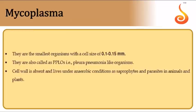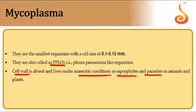Mycoplasmas are wall-less bacteria — they do not have a cell wall but have sterols (cholesterol) in their cell membrane and a trilamellar unit membrane. They are called PPLOs because they were first identified in Pleuropneumonia in cattle. They live under anaerobic conditions and can be saprophytic or parasitic to animals and plants.